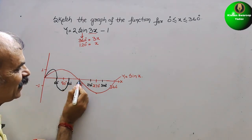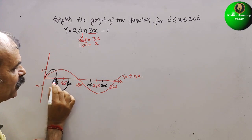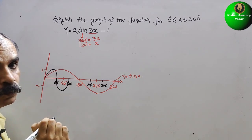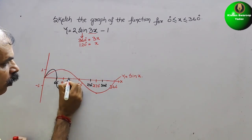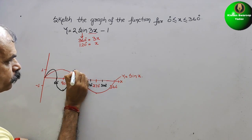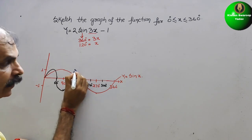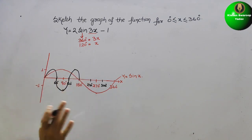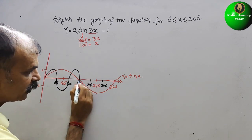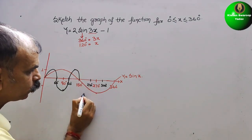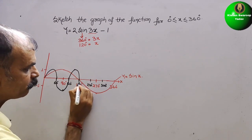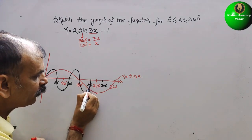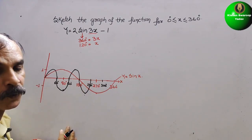For the second cycle: after 120°, the wave starts again at 0. It rises to 1 at 150°, comes back to 0 at 180°, goes to minus 1 at 210°, and returns to 0 at 240°.